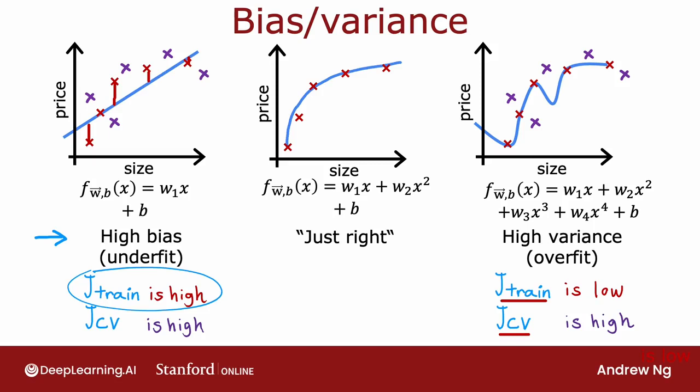The point is that by computing J_train and J_CV — seeing if J_train is high or if J_CV is much higher than J_train — this gives you a sense, even if you can't plot the function f, of whether your algorithm has high bias or high variance. In the middle case, J_train is pretty low since the model does well on the training set. J_CV is also pretty low. J_train not being too high indicates no high bias problem, and J_CV not being much worse than J_train indicates no high variance problem either — which is why the quadratic model seems to be a pretty good one for this application.